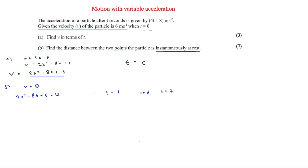Now we need to find the displacement by integrating v again to get s. Integrating 2t² − 8t + 6 gives s = (2/3)t³ − 4t² + 6t + c. We don't need to find c this time because we're finding the distance between the two points — subtracting one from the other will cancel the c's out.